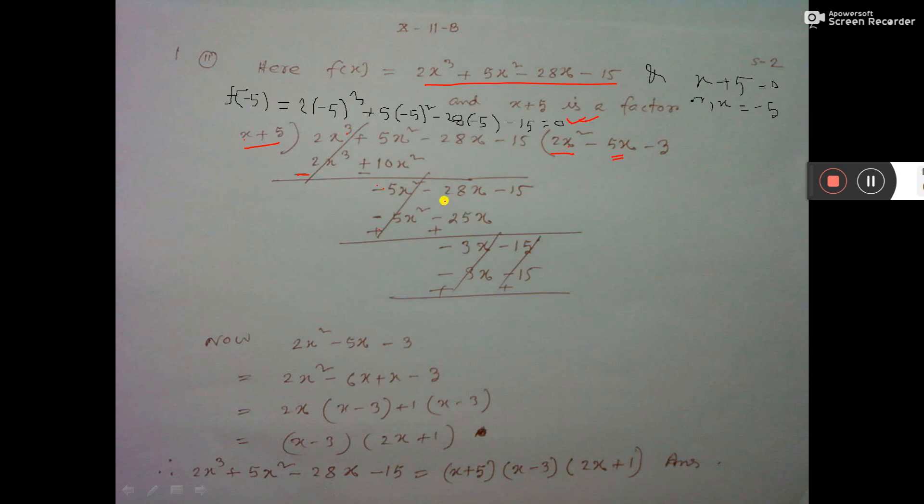Here, see opposite sign, subtraction and sign of greater or minus that I have to write here. So 3x minus 15. Again, you multiply by minus 3. Then it will be minus 3x minus 15. If you subtract, sign will be changed. So plus minus will cut. You see the quotient, it is 2x square minus 5x minus 3. That you take here.